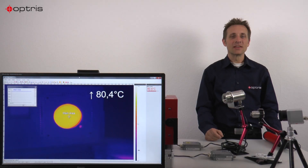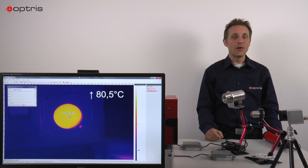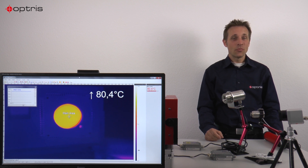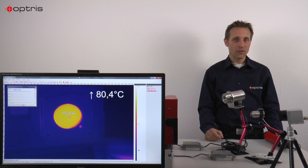In many plastic applications we have to measure temperatures of very thin plastic material. So we have to be careful to select the right wavelengths of our sensors.